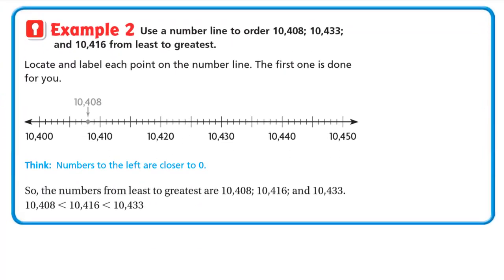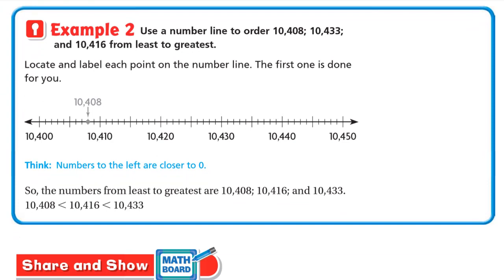Example two: use a number line to order 10,408, 10,433, and 10,416 from least to greatest. Locate and label each point on the number line — the first one, 10,408, is already done. Numbers on the left are less than numbers on the right. For 10,433: this is 10,430, then 10,431, 10,432, 10,433 is here.